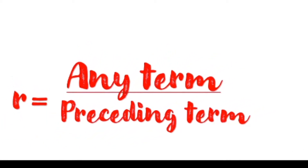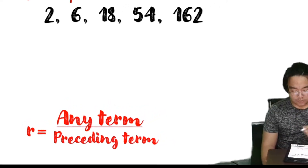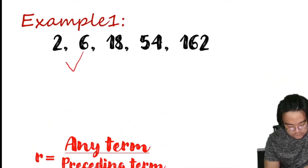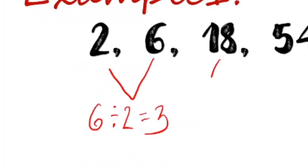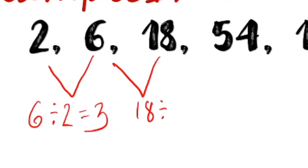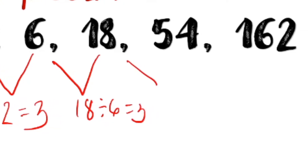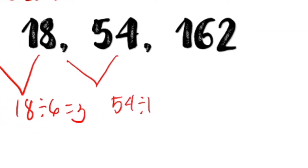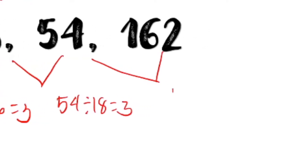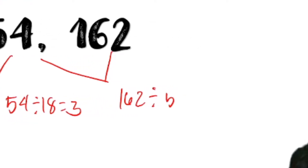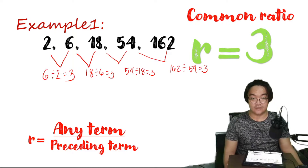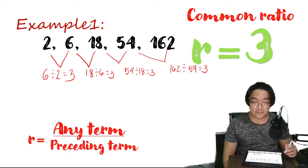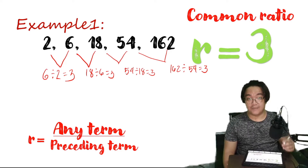To get the common ratio, all we have to do is divide any term by its preceding term. So in this case, we can get the common ratio by dividing 6 divided by 2, which gives us 3. Same goes with 18 divided by 6 gives us 3. 54 divided by 18 is equal to 3. And 162 divided by 54 will give us 3. So that tells us the common ratio is equal to 3. And if a sequence has a common ratio, we call that sequence a geometric sequence.